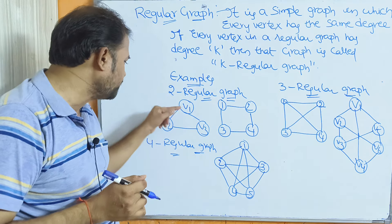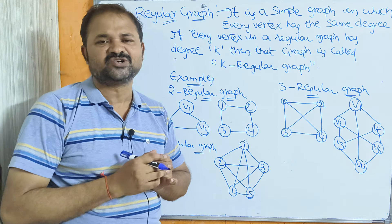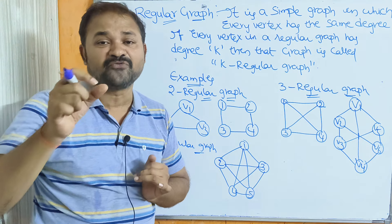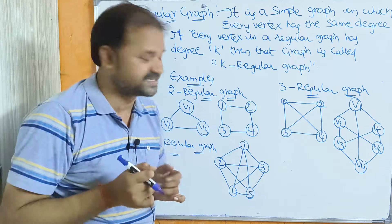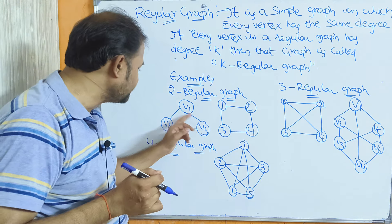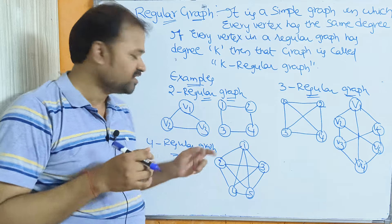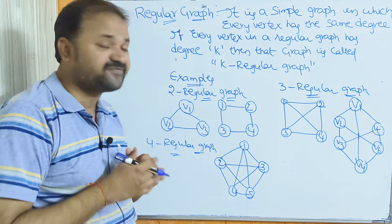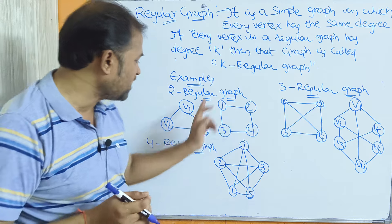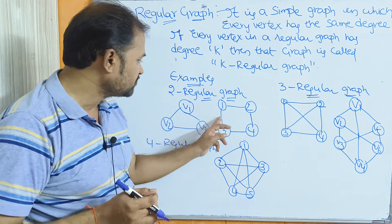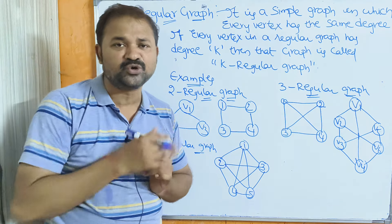Looking at this example, the degree of V1 is 2, V2 has 2 edges, and V3 has 2 edges. So the degree of every vertex in this graph is 2, which is why this is called a 2-regular graph. In this graph also, the degree of every vertex is 2, so this is also an example of a 2-regular graph.